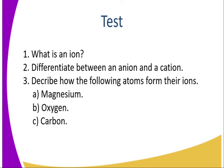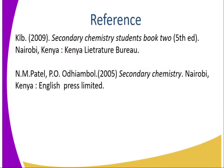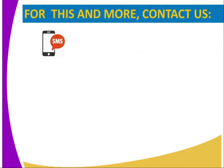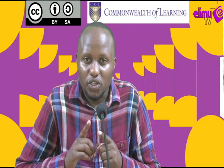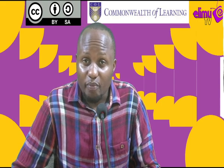Did we get to understand the goals of this lesson? Let's try to answer the following questions: What is an ion? Can you differentiate between an anion and a cation? Please describe how the following atoms form their ions — magnesium, oxygen, and carbon. You can refer to this concept in Secondary Chemistry Students Book 2 or Patel. Do send us an SMS or visit our Facebook and YouTube page at ElimuTV, or give us a tweet at ElimuTV underscore KE. Once again, your tutor Mr. Mangi Francis — do stay tuned at ElimuTV and experience much more.